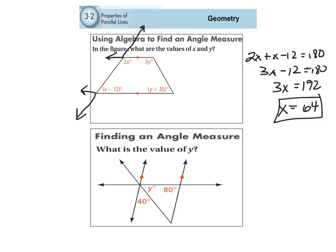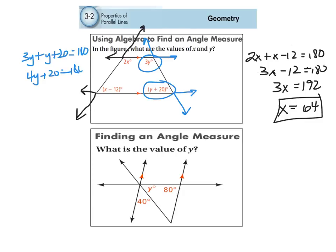Same thing on the other side. If I extend these lines, sometimes it's easier to see the different types of angles. These two are also same side interior angles. So: 3y plus (y plus 20) equals 180 degrees. Combining like terms: 4y plus 20 equals 180. Subtracting 20: 4y equals 160. Dividing by 4: y equals 40. So y is 40 and x is 64 — examples of using same side interior angles adding up to 180 degrees.